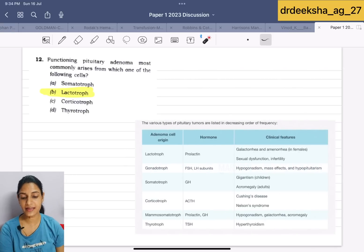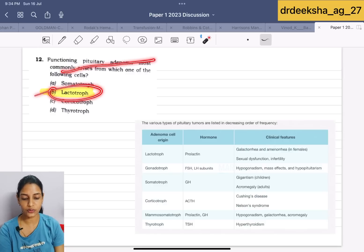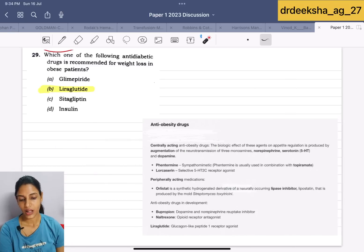Next question is, functioning pituitary adenoma most commonly arises from which of the following cells? Functional pituitary adenoma arise from all of the following cells, but the order of frequency is lactotroph most common, then gonadotroph and they were asking most commonly. Answer is lactotroph in this case. Which one of the following anti-diabetic drug is recommended for weight loss in obese patients? If we talk about anti-obesity drugs, then among the anti-diabetic, liraglutide is used.